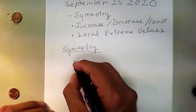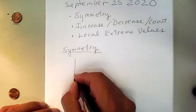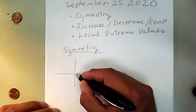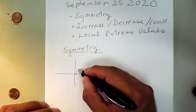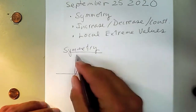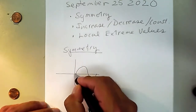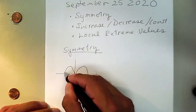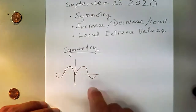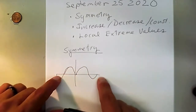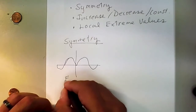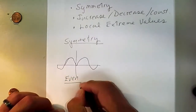A function will be symmetric across the y-axis if it looks perhaps like this. So if there's a bump here, symmetry across the y-axis means that it will reflect over here in the same way. Functions that look like this are going to be called even functions.